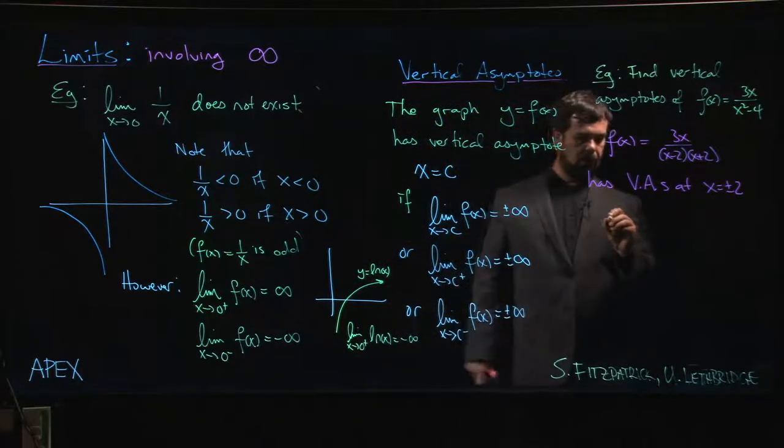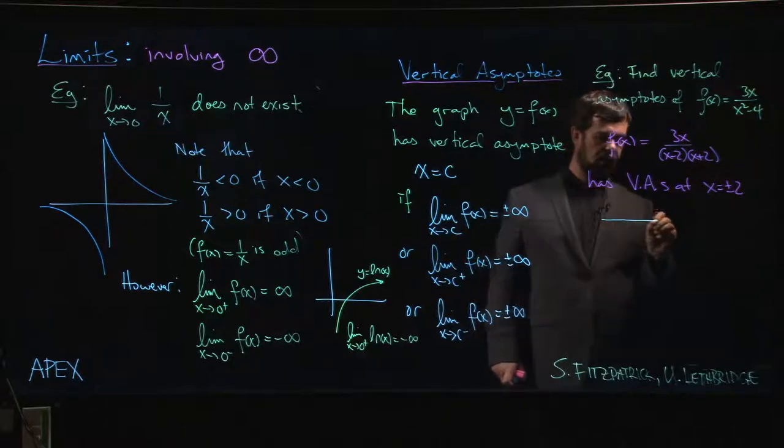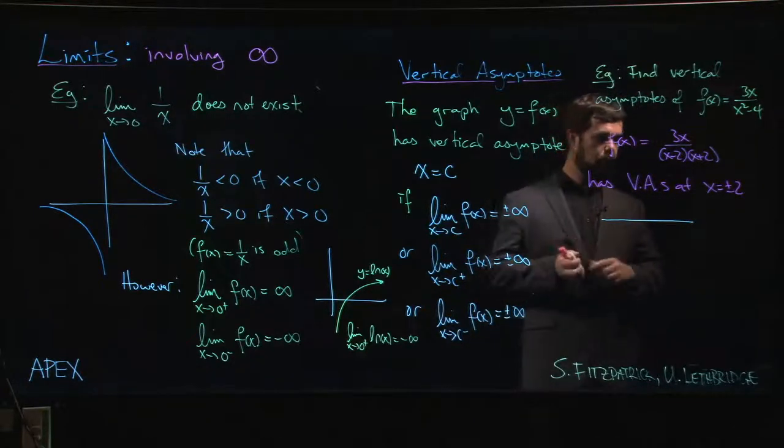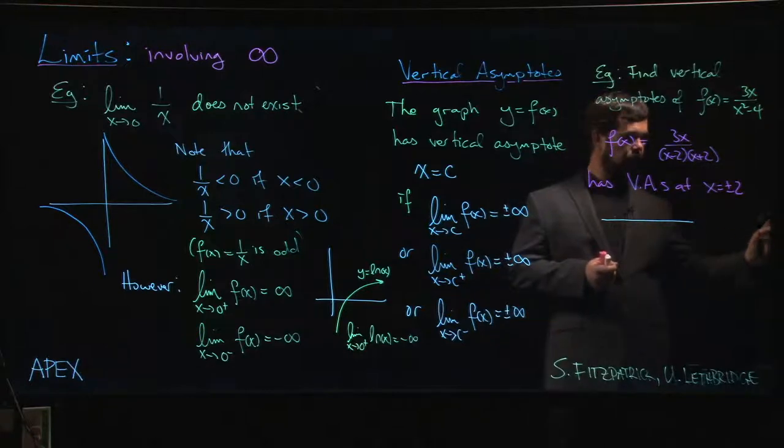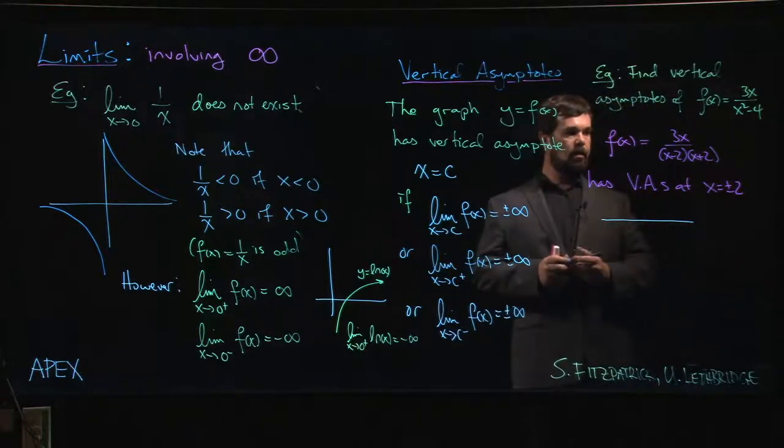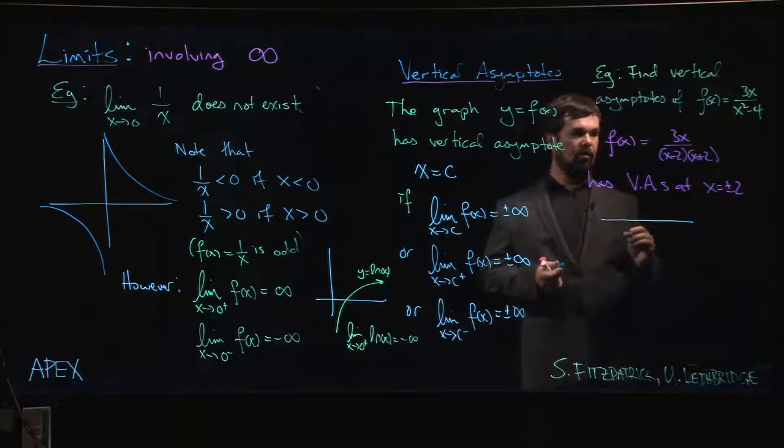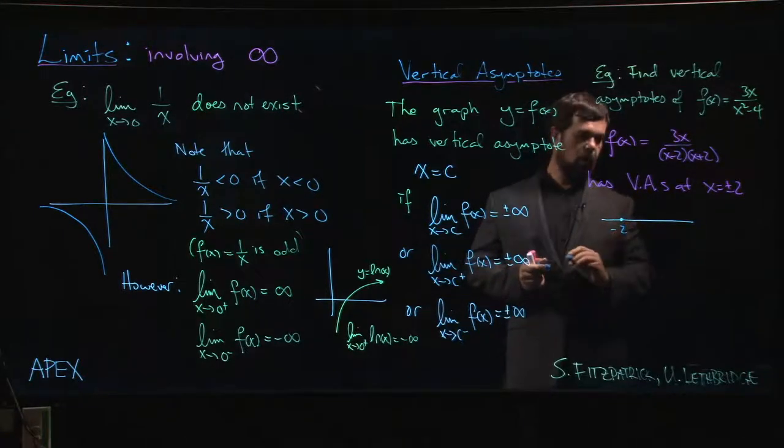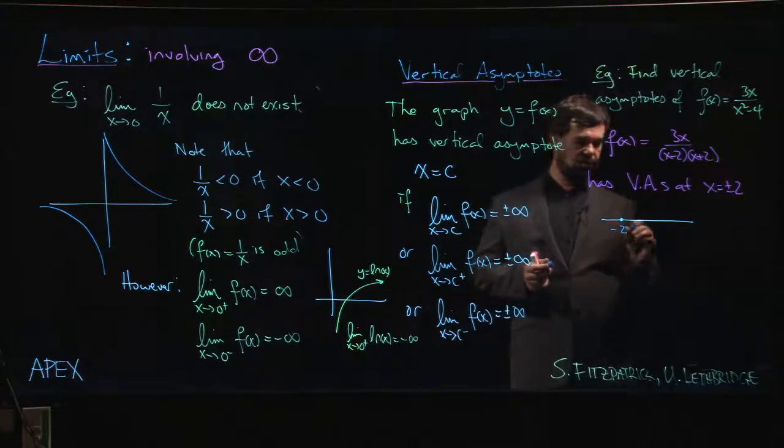This is one of these places where it can be very convenient to give yourself a little number line. We mark off the three points of interest. So the three points of interest are the two places where the denominator is 0 and the one place where the numerator is 0. And those are of interest because those are the only places where my function can potentially change sign.